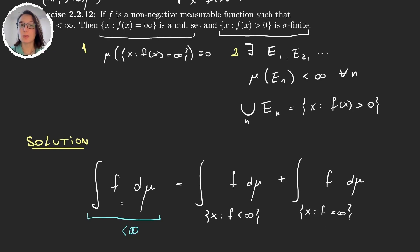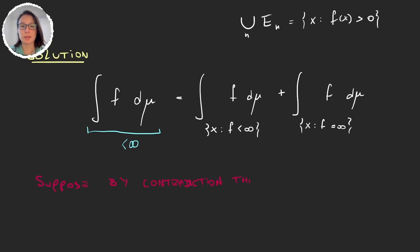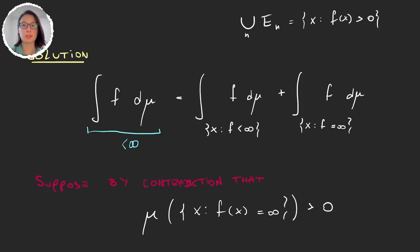So what the first part of the problem says is that this set has to have measure zero, because otherwise the integral could not be finite. What we're going to do is suppose by contradiction that this doesn't happen — that the measure of the set of all x where f is infinite has some positive measure — and try to get a contradiction. We can't just integrate f with an abstract measure without using the definition of integral, which is done via simple functions.